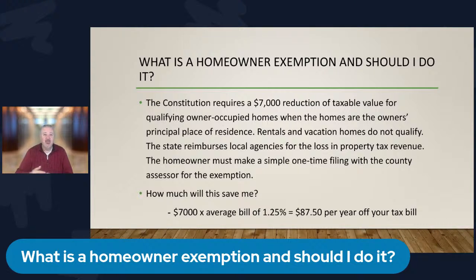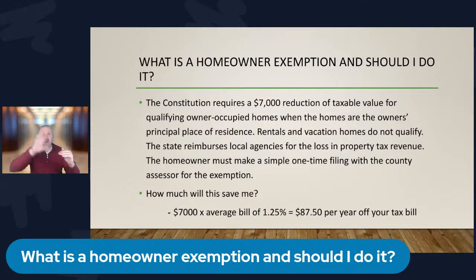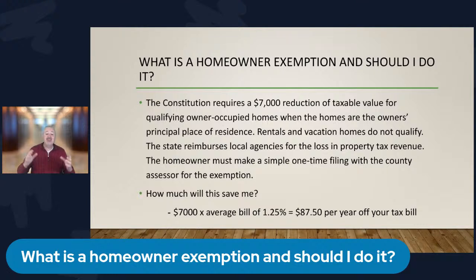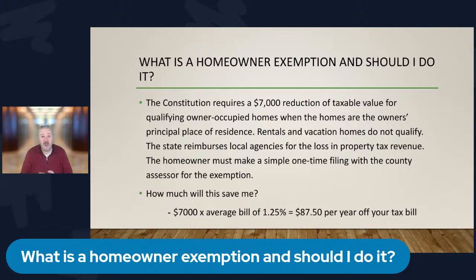At my ballpark number of 1.25% for property tax payments, that means you're saving $87.50 a year off your tax bill — about $7 a month. That's a free coffee every single month. People will say 'it's only saving me $7 a month' and not file the form — but there is zero cost and zero negative to having a homeowner's exemption.